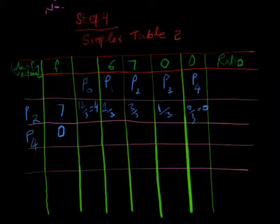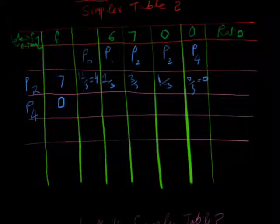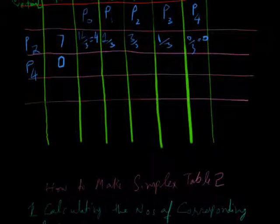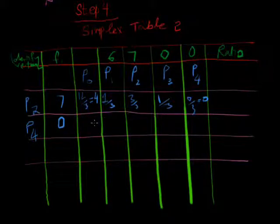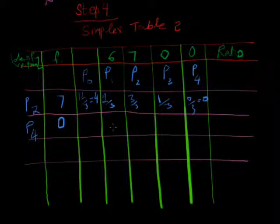Now, we have to calculate other rows. This 7 is this value and 0 is same like P4. Now we have to calculate other rows and its values: P0, P1, P2, P3, and P4.